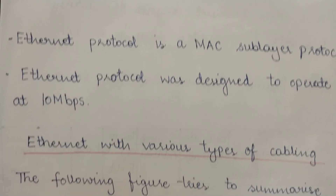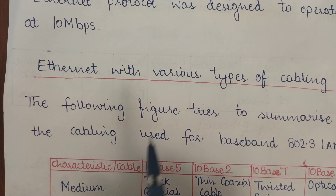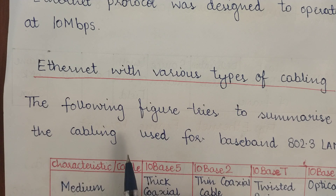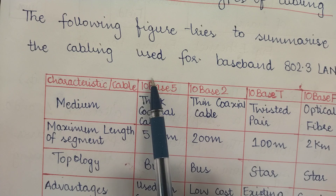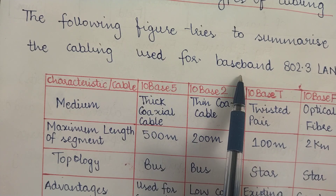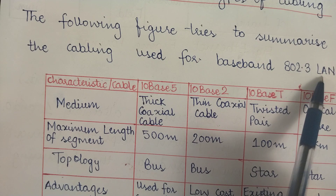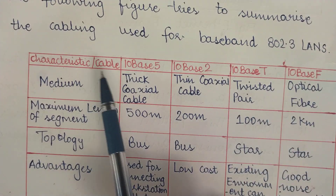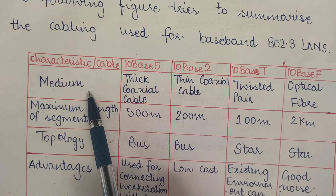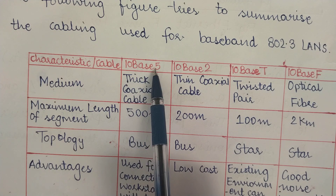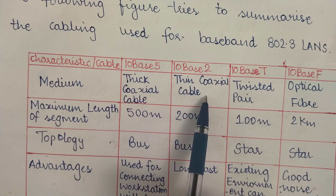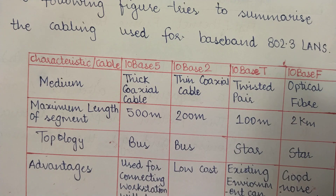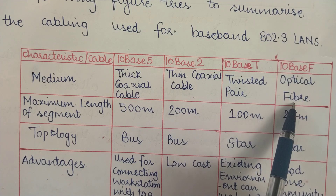Now we will look at Ethernet with various types of cabling. The following table summarizes the different kinds of cabling used for baseband 802.3 LANs. For 10Base5, the medium is thick coaxial cable. For 10Base2, it is thin coaxial cable. For 10BaseT, it is twisted pair. For 10BaseF, it is optical fiber.